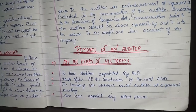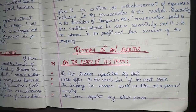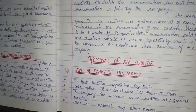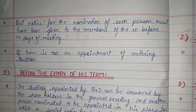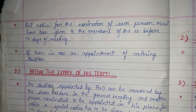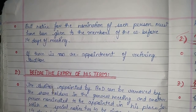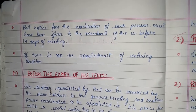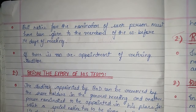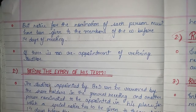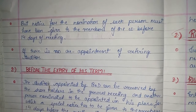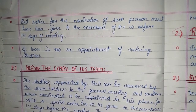If the Auditor doesn't work well or does something wrong, the company can appoint any other person. But notice for the nomination of such person must be given to the members before 14 days of the meeting. The nominated person has to be informed that they have been nominated for the Auditor position, so they have to be available at the meeting.